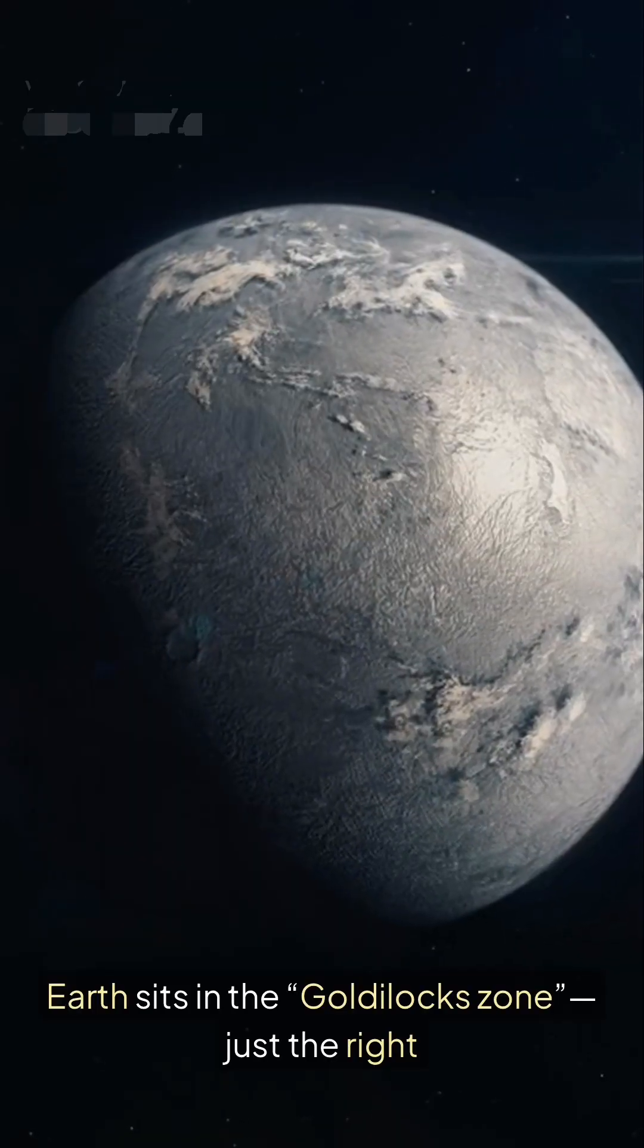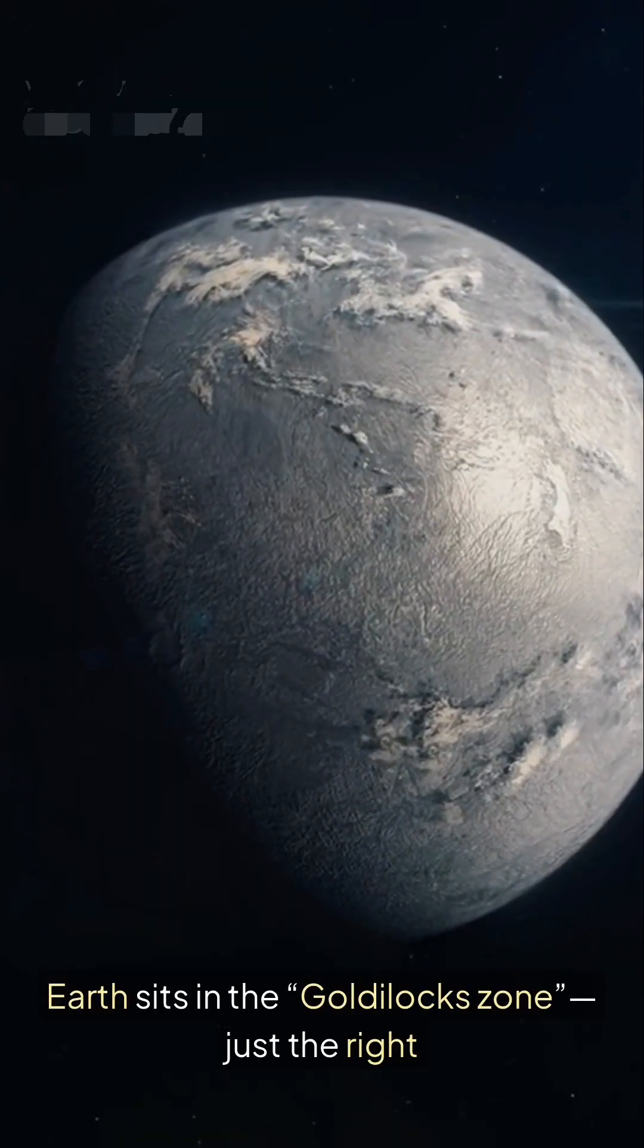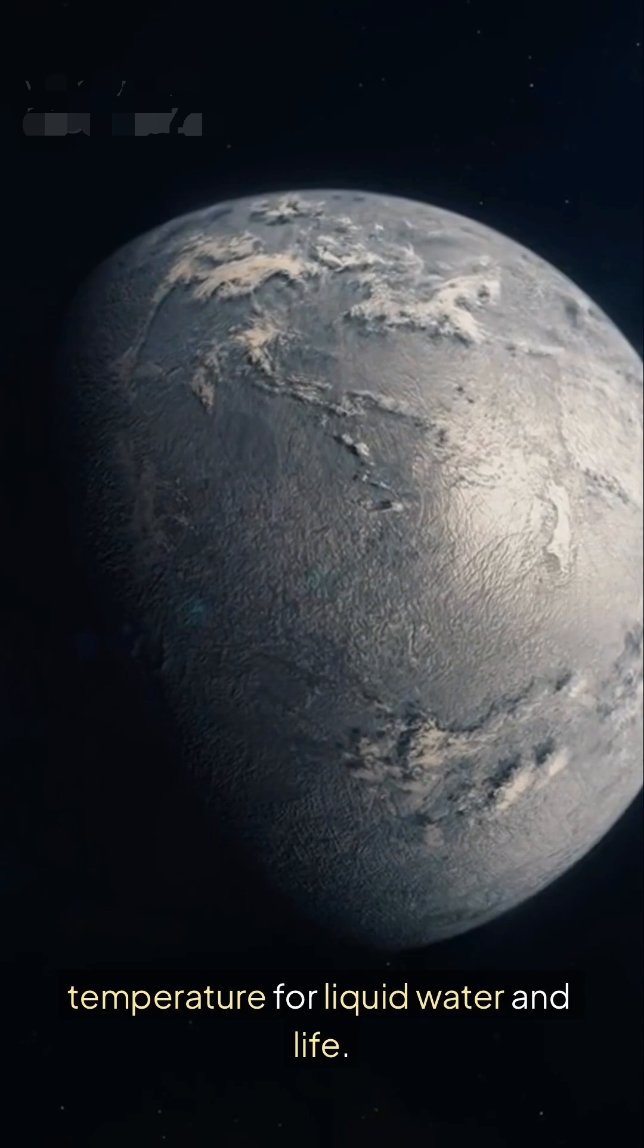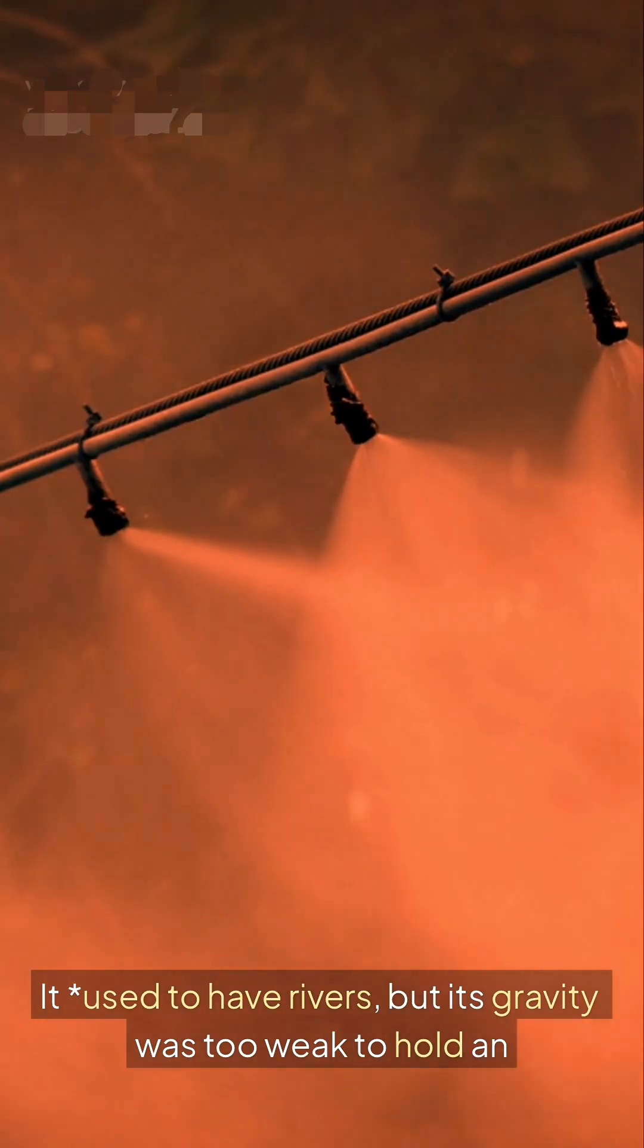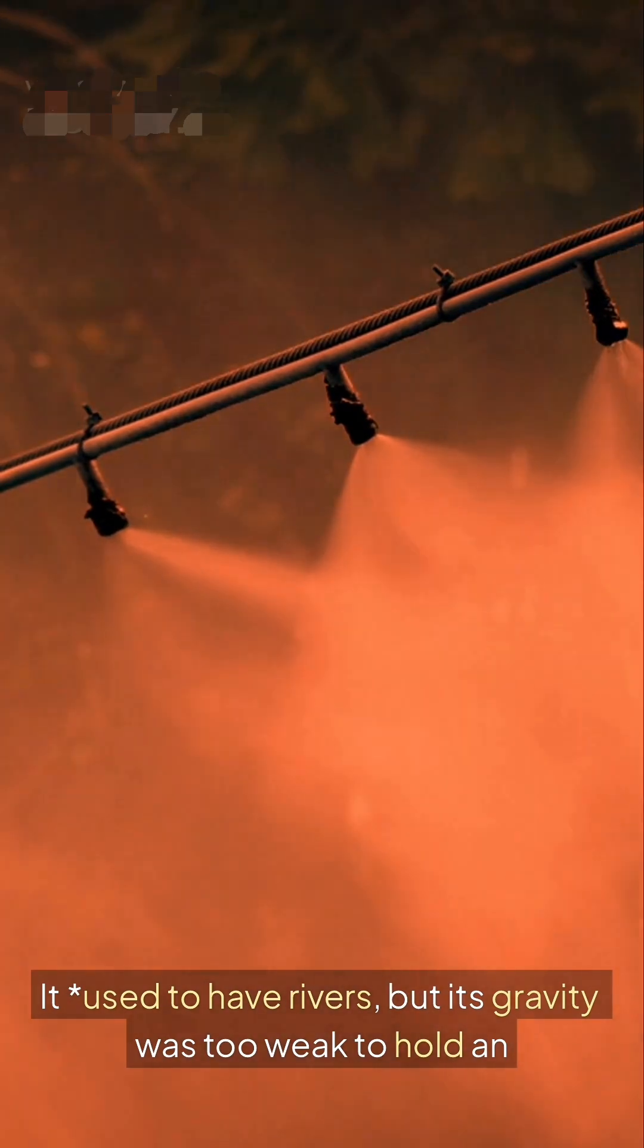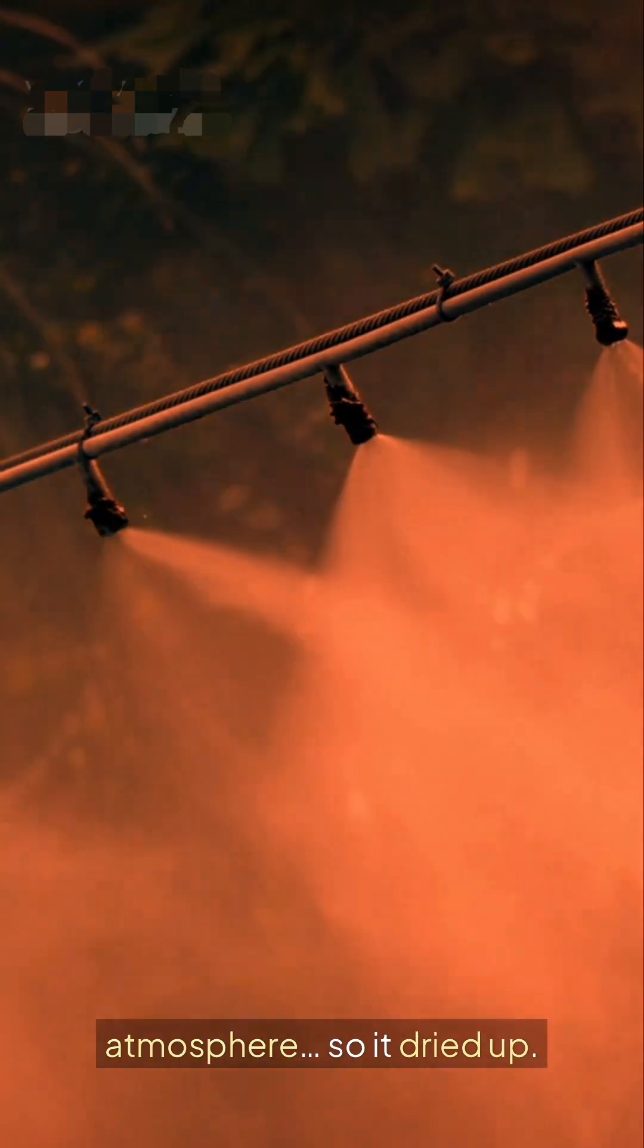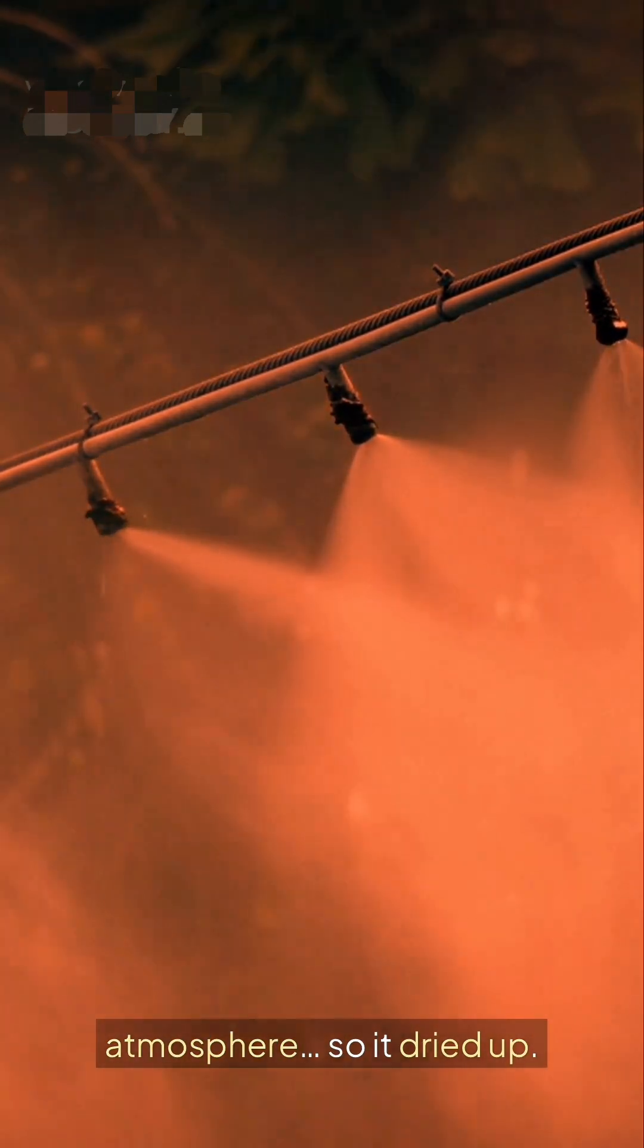Earth sits in the Goldilocks zone, just the right temperature for liquid water and life. But Mars? It used to have rivers, but its gravity was too weak to hold an atmosphere, so it dried up.